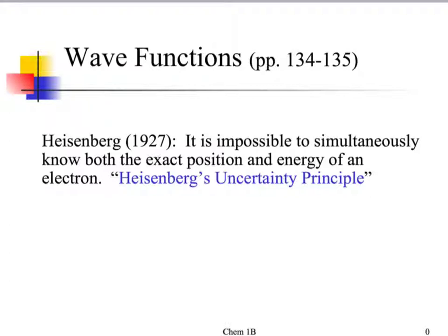It is impossible to know the exact position and energy of the electron at the same time. Write down Heisenberg, because I want you to remember him and know that this is called the Heisenberg Uncertainty Principle.